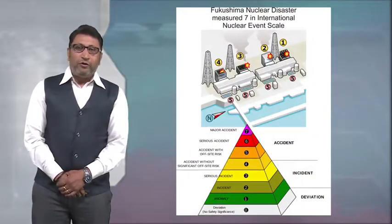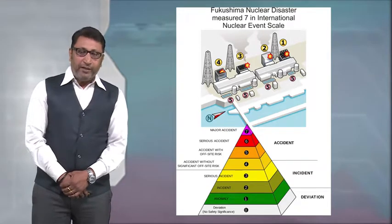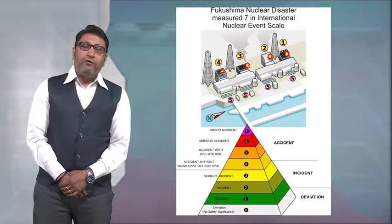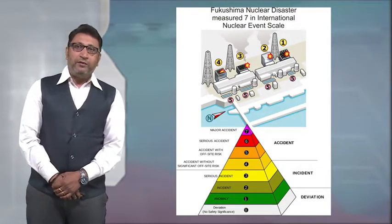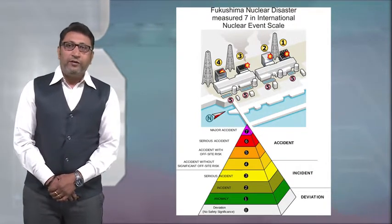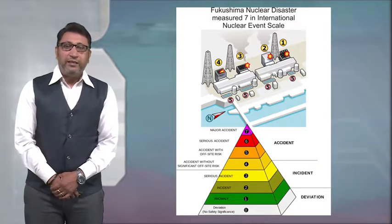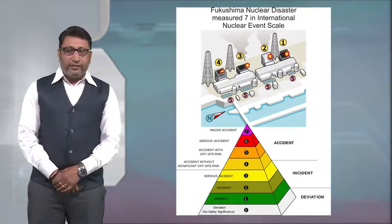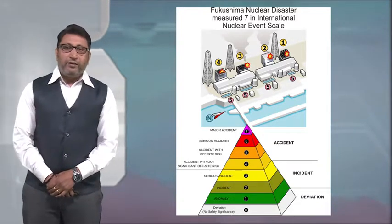Talking about Fukushima, Japan, the world knows what happened because of hazardous leakage from the nuclear plant there. Our own country India serves as an example for all three types of hazards: natural, quasi-natural, and technological.